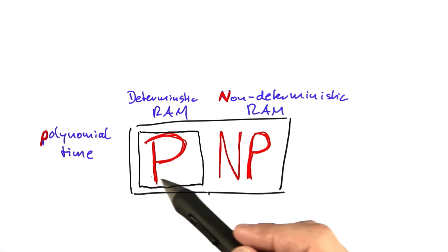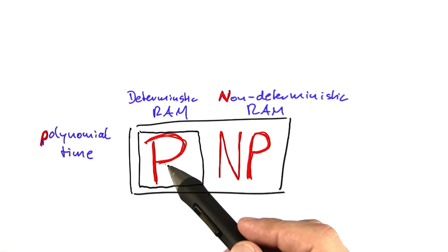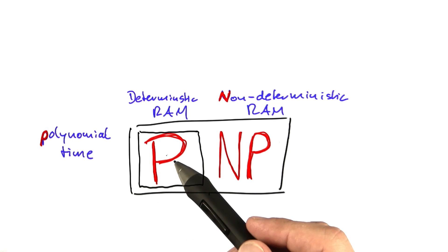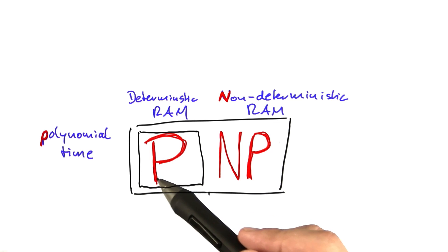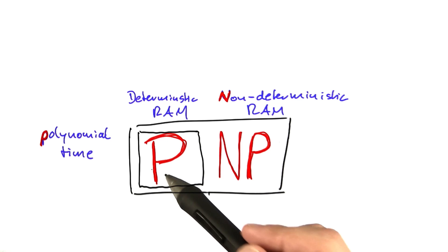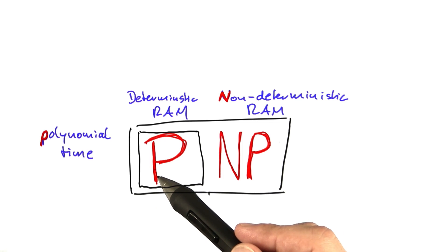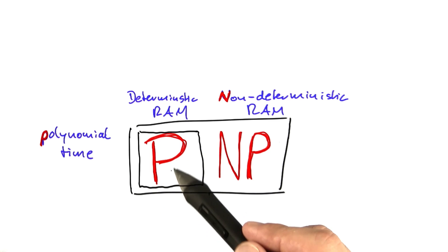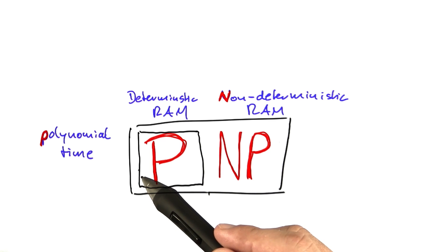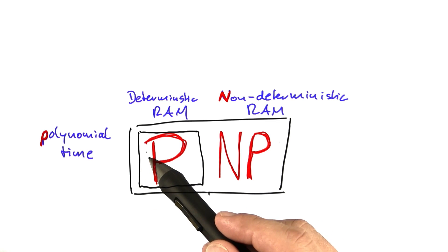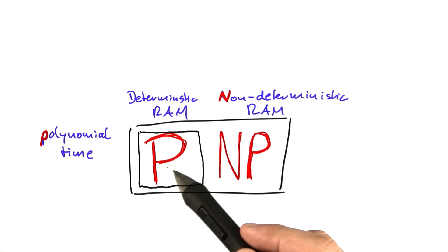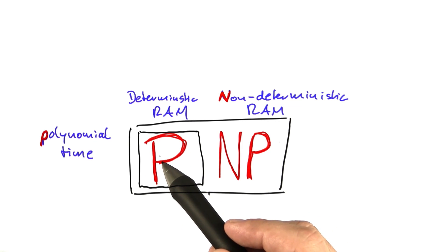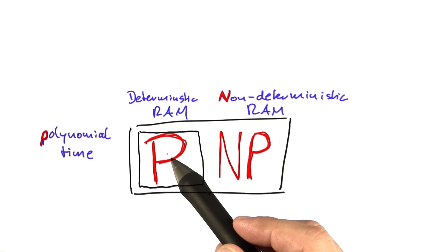P contains all the problems that we know are easy — for example, finding the shortest path between two points in a graph, looking up an entry in a database, multiplying two numbers, and thousands of problems more. Basically, any algorithm you'll have come across in an introductory algorithms course will fall into this category. There's some theoretical nitty-gritty regarding optimization and decision problems here, but we can ignore that for now.